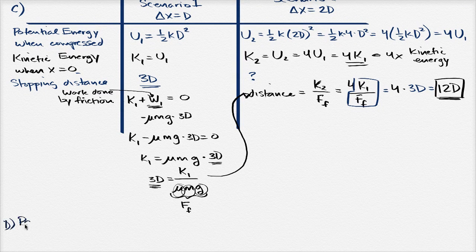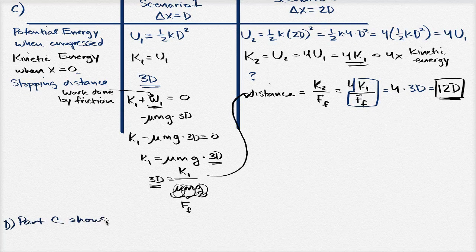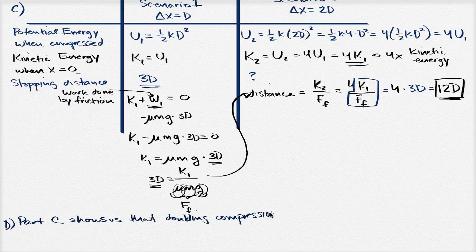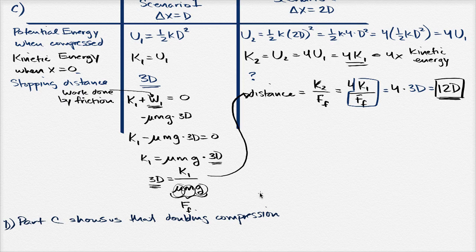So D, part C shows us that doubling compression does result in more potential energy.